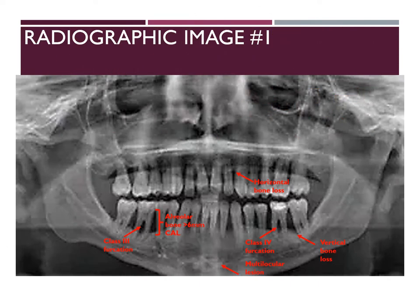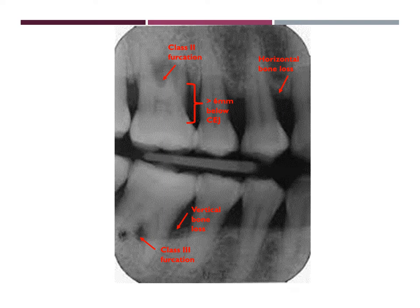In this radiographic image, you can clearly see horizontal bone loss on the anterior maxillary and mandibular arch. Vertical bone loss is present in the maxillary and mandibular arch as well, however it is more localized to the posteriors. You can clearly see a class 4 furcation which is clinically visible in another image, as well as a class 3 furcation on tooth number 30. On that same tooth, you can also see a 6 mm clinical attachment loss. There is also a multilocular lesion between teeth number 23 and 26. An additional close-up radiographic image was added to better show the bone loss, furcation, and clinical attachment loss.